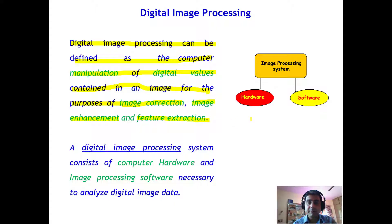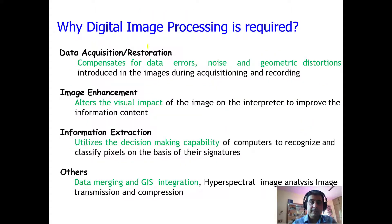This digital image processing mainly requires hardware and software. Now, why is digital image processing required? There are some errors induced at the time of data acquisition that need to be restored. It compensates for data errors, noise, missing data, and geometric distortions induced in the images during acquisition and recording by the sensor or while being recorded on the satellite platform.